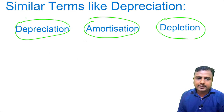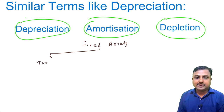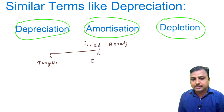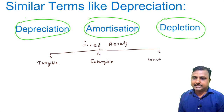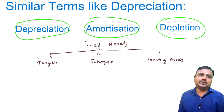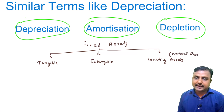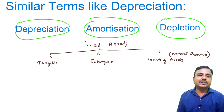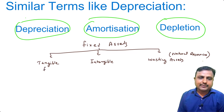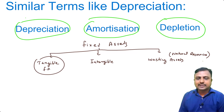If we talk about fixed assets, there are three types. One is tangible fixed assets, which we can see and touch — like machinery, furniture, and building. One is intangible fixed assets, which we cannot see physically — like goodwill, copyright, patent, and trademark. And third are wasting assets — natural resources which cannot be reused once consumed, such as gas, coal, and petrol. These are called wasting assets. If the value of tangible fixed assets is reduced, we use the word depreciation.